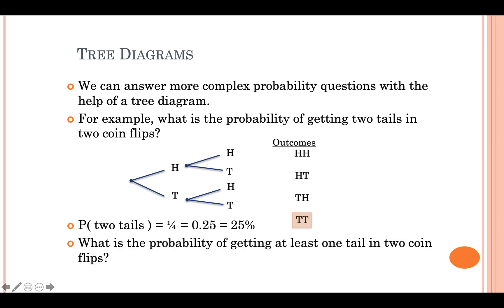If we change this a bit and use the phrase at least one tail, well now we're referring to a different set of these outcomes. The number of outcomes is still four, but at least one tail refers to one tail or two tails. So we have one, two, three outcomes in our list of outcomes that satisfy the criteria for at least one tail. Three out of four is 0.75 or 75%. And that's how you would answer this question.